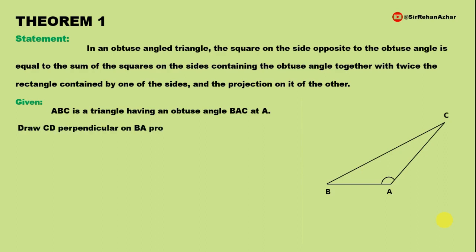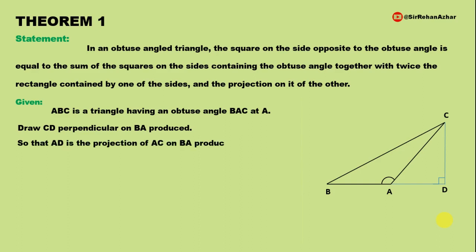We draw CD perpendicular to AB produced — we extend AB and draw CD perpendicular to it, meeting at point D. So the angle at D is 90 degrees. Therefore, AD is the projection of AC onto AB produced.